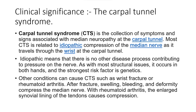Idiopathic means that there is no other disease process contributing to pressure on the nerve. As with most structural issues, it occurs in both hands, and the strongest risk factor is genetics. Other conditions can cause CTS such as wrist fracture or rheumatoid arthritis. After fracture, swelling, bleeding, and deformity compress the median nerve. With rheumatoid arthritis, the enlarged synovial lining of the tendons causes compression.